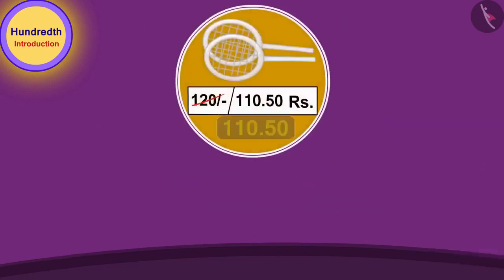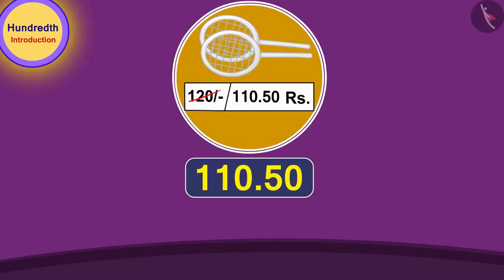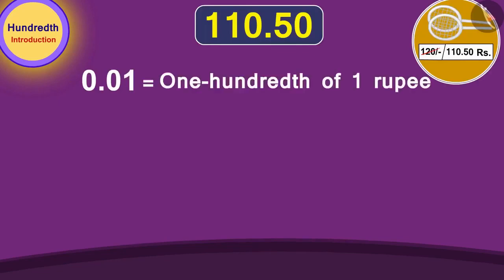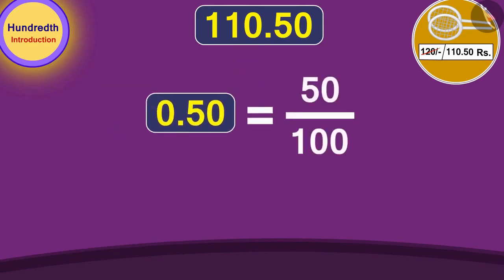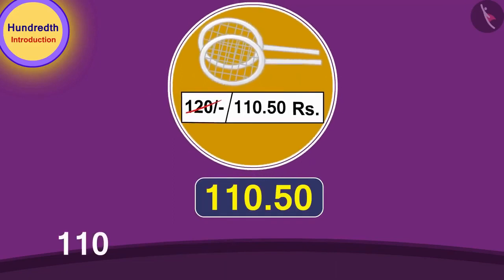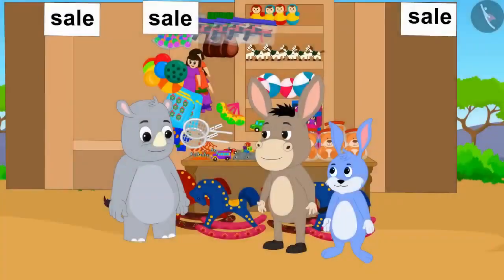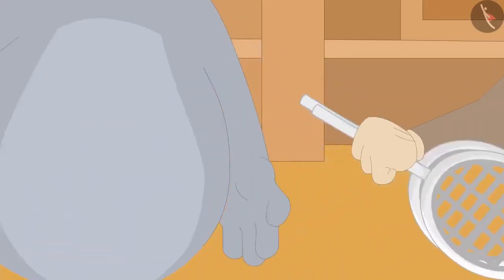We can write one hundredth part of any number using a decimal point as 0.01. The price of the badminton racket is 110.50 rupees. Since 0.01 rupee equals one paise, 0.50 rupees equals 50 hundredths of a rupee, or 50 paise. In this way, the price of the badminton racket is 110 rupees and 50 paise. Bhoola quickly understood and bought the racket by giving 110 rupees and 50 paise to Gaggoo.